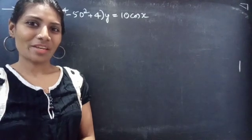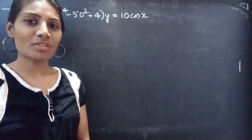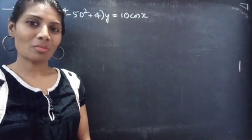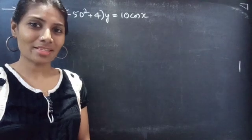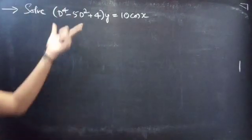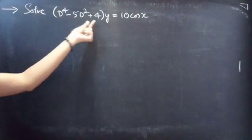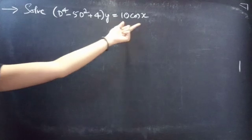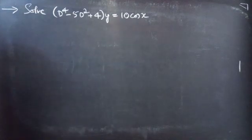Hello everyone, this is Jay Kalpana here. In this video, we are going to solve a differential equation from higher order linear differential equations. So let's get going. The problem: solve (D⁴ − 5D² + 4)y = 10 cos x.